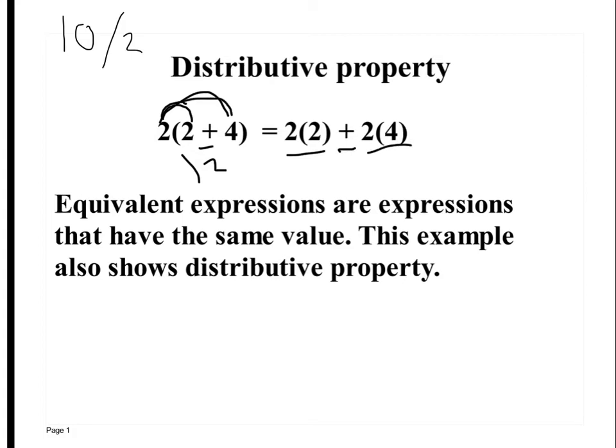These are what we call equivalent expressions because they have the same value. 2 times 2 is 4, 2 times 4 is 8, which equals 12 as well. So these are equivalent expressions because they have the same value. This shows the distributive property.